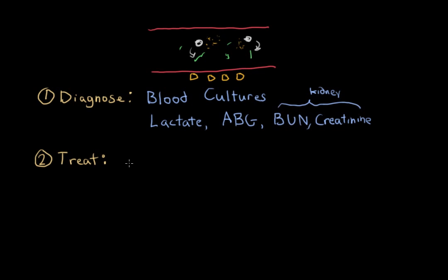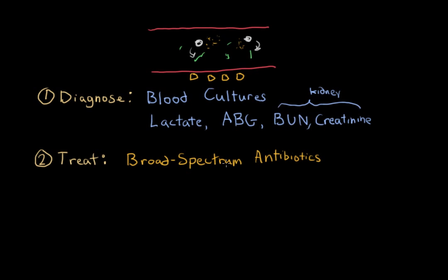Treatment usually starts with broad spectrum antibiotics. When you first treat sepsis, you'll have drawn a blood culture but won't have results back yet, so you need an antibiotic that can treat many types of infections — gram positives, gram negatives, many different bacteria. If the patient doesn't improve, antifungals may also be indicated. Once cultures return, the patient can be switched to a more tailored antibiotic or antimicrobial therapy targeting the specific organism.